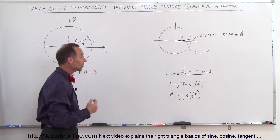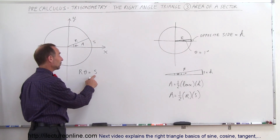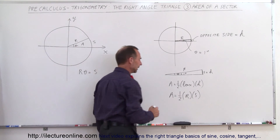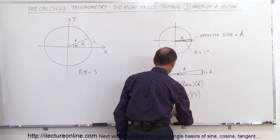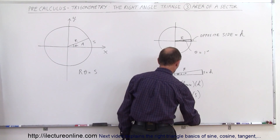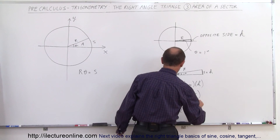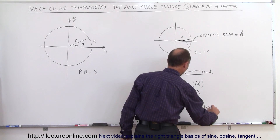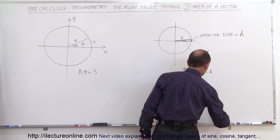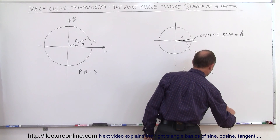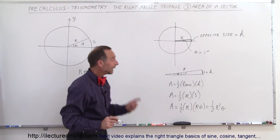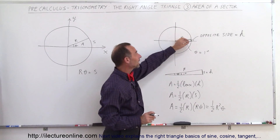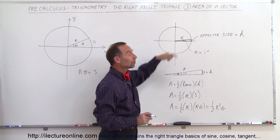What is s equal to? We know that s is equal to r times theta, with theta in radians. So the area of that triangle is equal to one-half times r times r times theta, which gives us one-half r squared theta. That's the area of a small little sliver of a triangle where the angle is one degree.